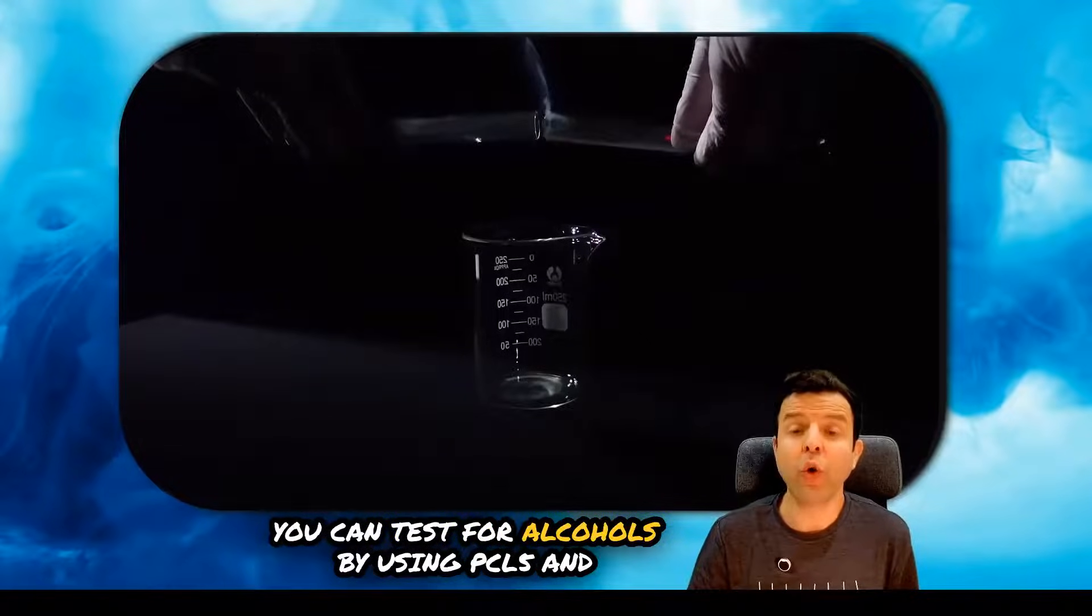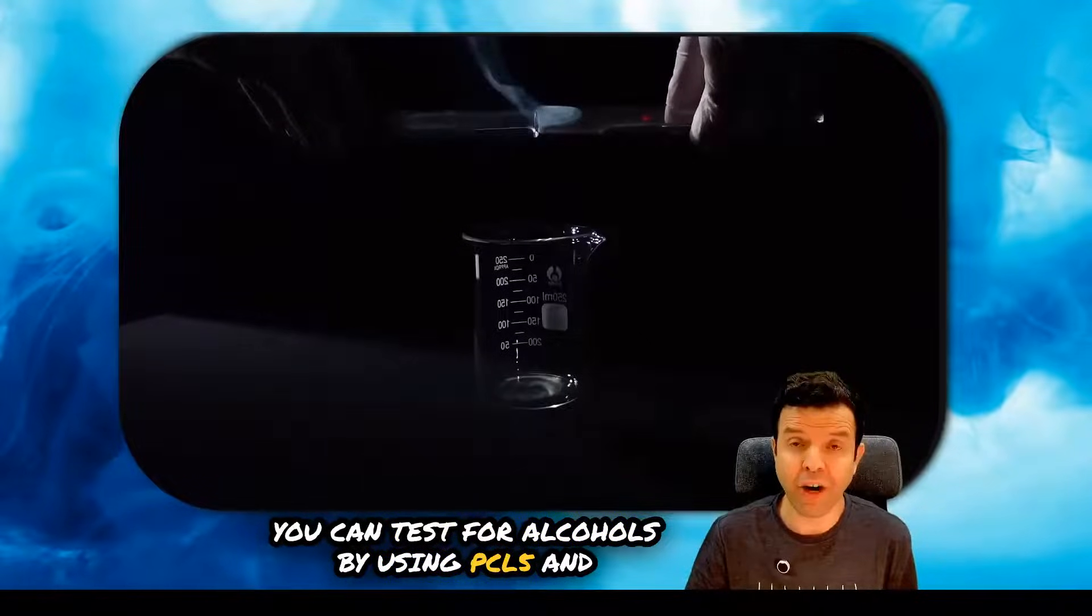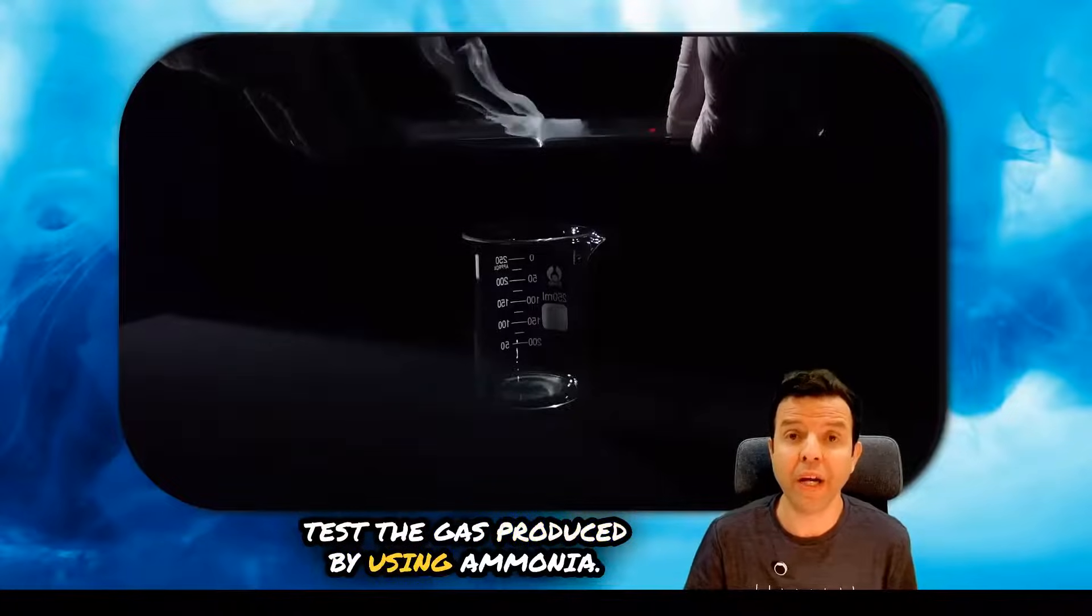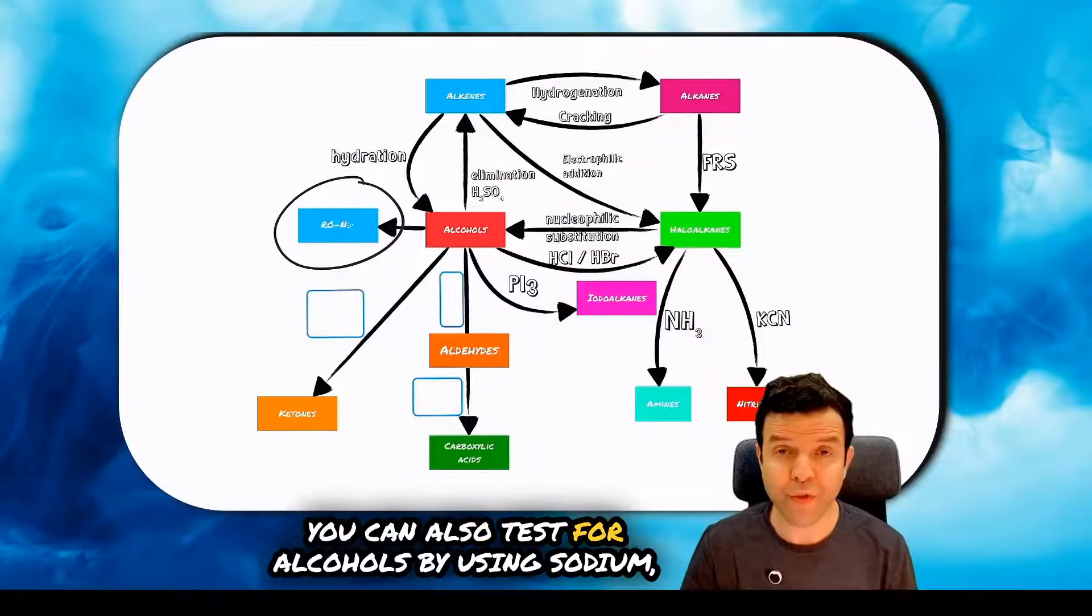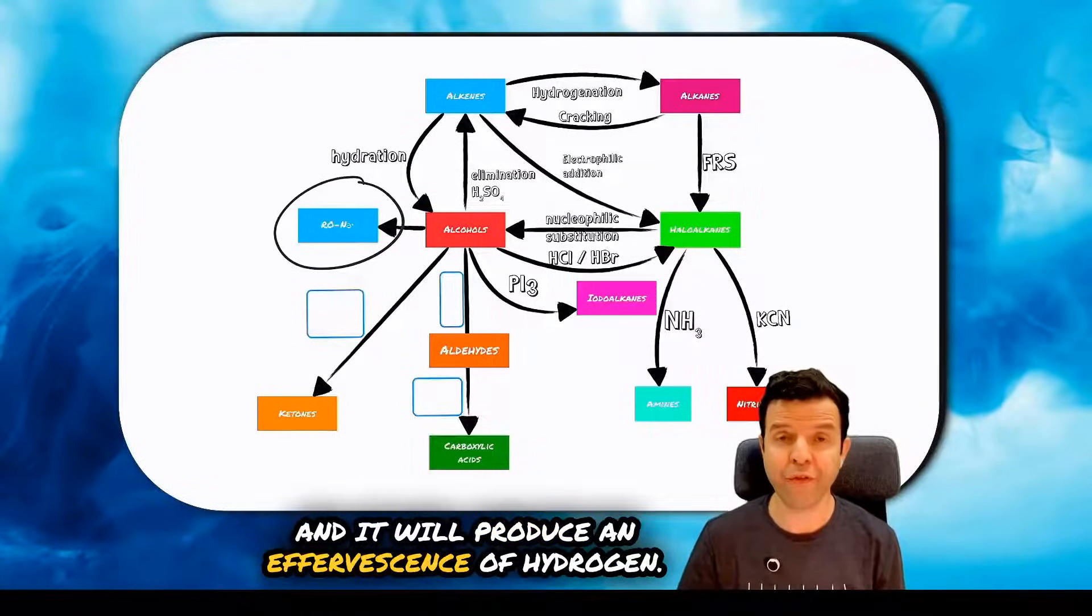You can test for alcohols by using PCl5 and test the gas produced by using ammonia. That will produce white smoke. You can also test for alcohols by using sodium and it will produce an effervescence of hydrogen.